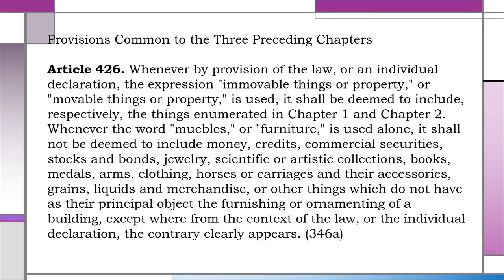Provisions Common to the Three Preceding Chapters. Article 426. Whenever by provision of the law or an individual declaration the expression 'immovable things or property' or 'movable things or property' is used, it shall be deemed to include respectively the things enumerated in Chapter 1 and Chapter 2. Whenever the word muebles or furniture is used alone, it shall not be deemed to include money, credits, commercial securities, stocks and bonds, jewelry, scientific or artistic collections, books, medals, arms, clothing, horses or carriages and their accessories, grains, liquids and merchandise, or other things which do not have as their principal object the furnishing or ornamenting of a building, except where, from the context of the law or the individual declaration, the contrary clearly appears.